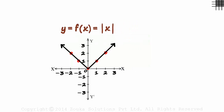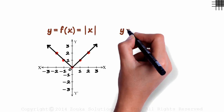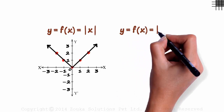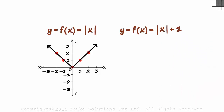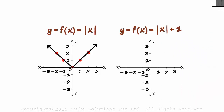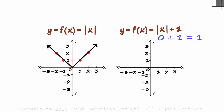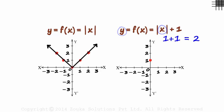Let's try modifying this function a bit. What if the function is f of x equal to the absolute value of x plus one? Will you be able to draw a graph? Try it! If x is zero, then y will be zero plus one, which is one. Zero comma one will be one of the points. If x is one, then y will be equal to two — one comma two. And if x is two, then y is three, and so on.